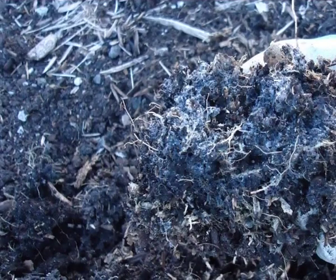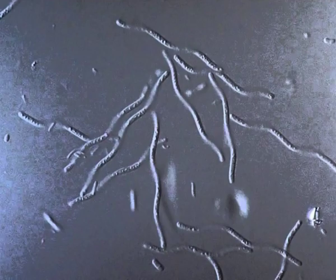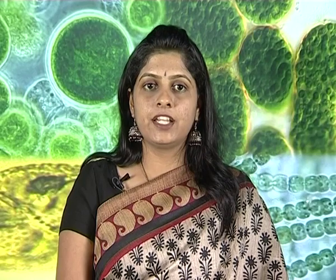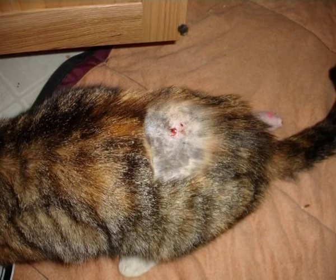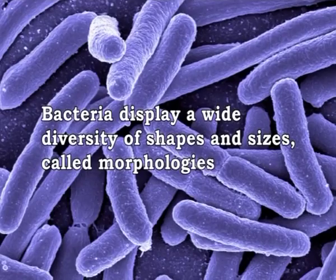Bacteria inhabit soil, water, acidic hot springs, radioactive waste, and the deep portions of the earth's crust. Bacteria also live in symbiotic and parasitic relationships with plants and animals. Bacteria display a wide diversity of shapes and sizes called morphologies.